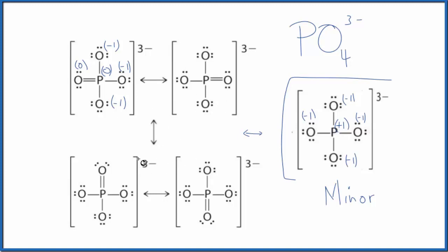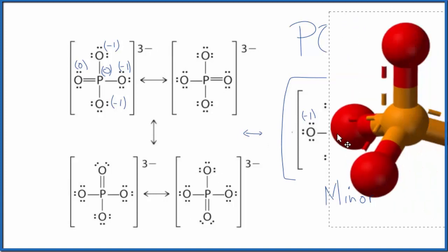What we really end up with is an average of these resonance structures and in this case because these are the major resonance structures, the average is mostly between these ones here and that'll look like this.